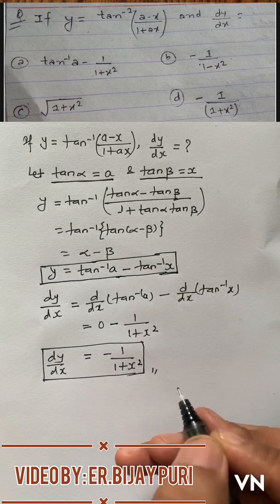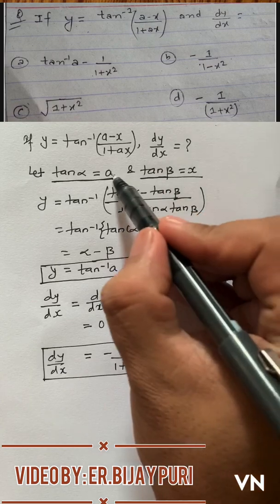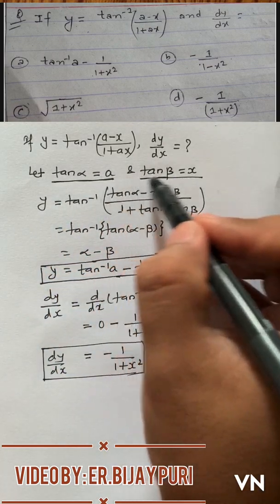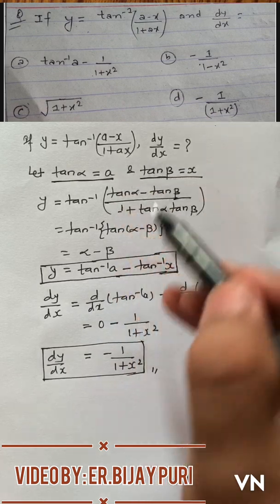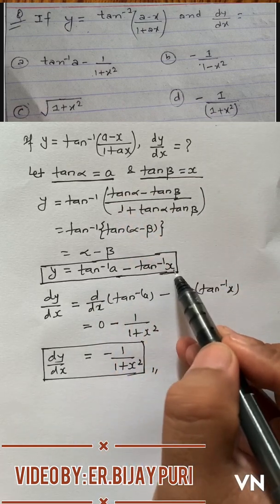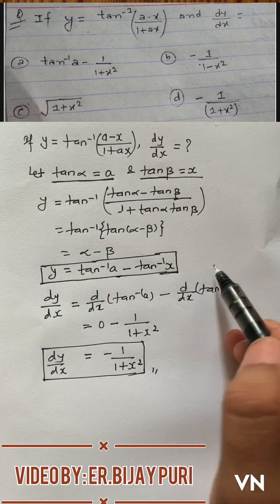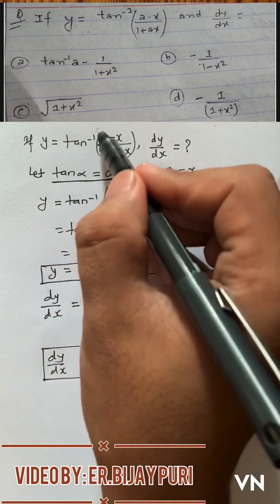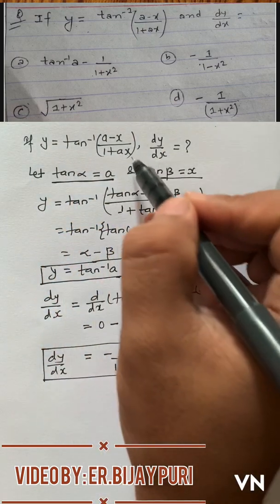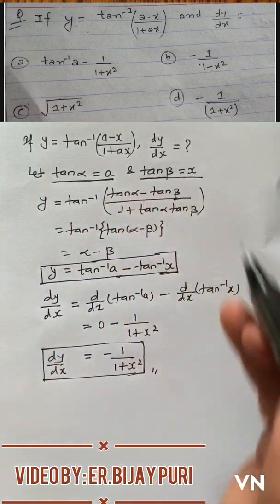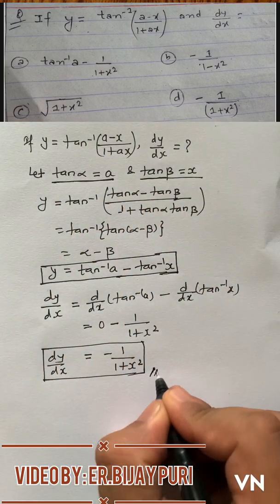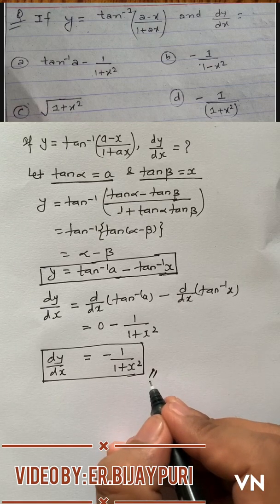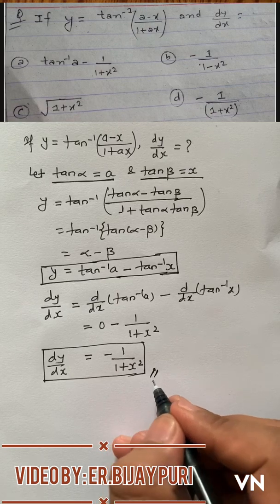So dy by dx equals minus 1 by (1 plus x square) is the correct answer. But one thing I want to say here is we do not need to let tan alpha and tan beta as a and x, because if we know the formula of tan inverse a minus tan inverse b, then that formula is tan inverse of (a minus b) by (1 plus ab). So we can directly write this as y equals tan inverse a minus tan inverse x using the property of inverse trigonometric function. This is the answer of this mathematics problem which is posted by Gaurab Bohora in our group EPCM 2077.